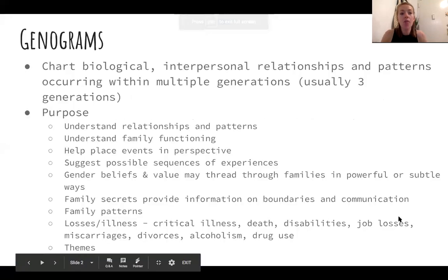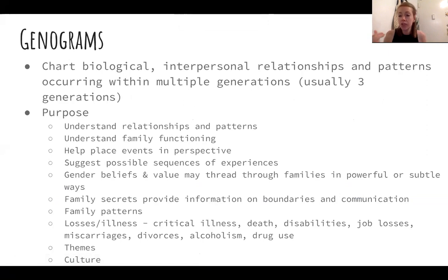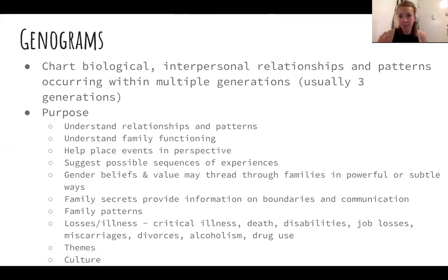Genograms and eco maps chart the biological and interpersonal relationships. I usually do them within three generations, but it's up to you — you can modify and change this. One of the purposes is to understand relationship patterns, family functioning, different histories of abuse or substance use, even deaths and different life events that have occurred with your client or family.